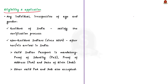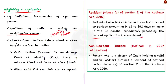Any individual irrespective of age and gender can obtain Aadhaar if they are a resident in India and satisfy the verification process. A resident of India is defined in the Aadhaar Act as an individual who has resided in India for 182 days or more in the 12 months immediately preceding the date of application for enrollment. Non-Resident Indians (NRIs) can also avail Aadhaar — this provision was included through a notification in 2019.